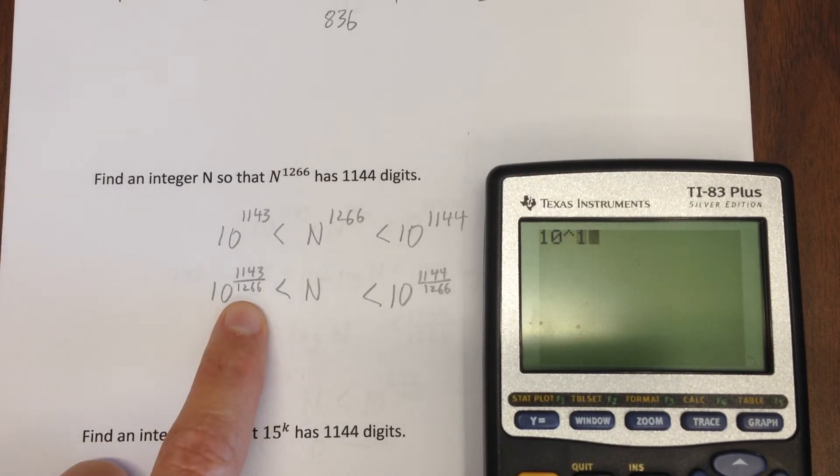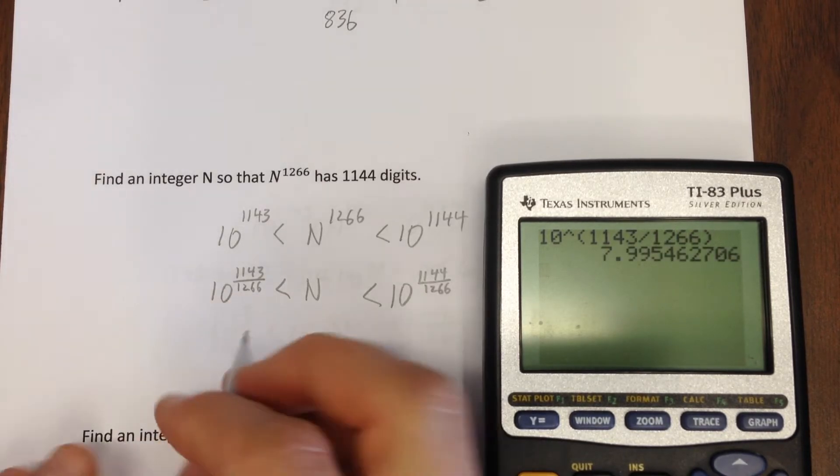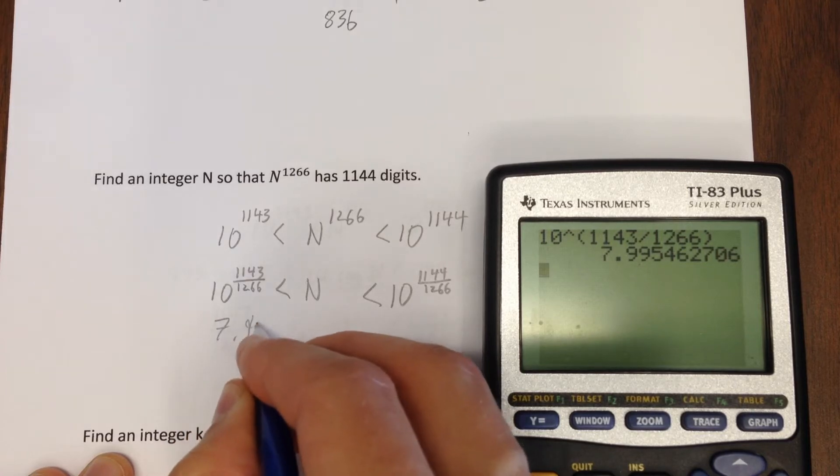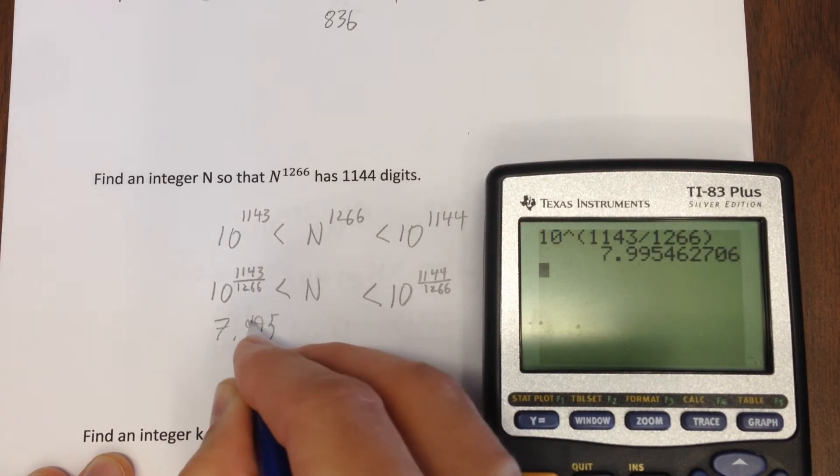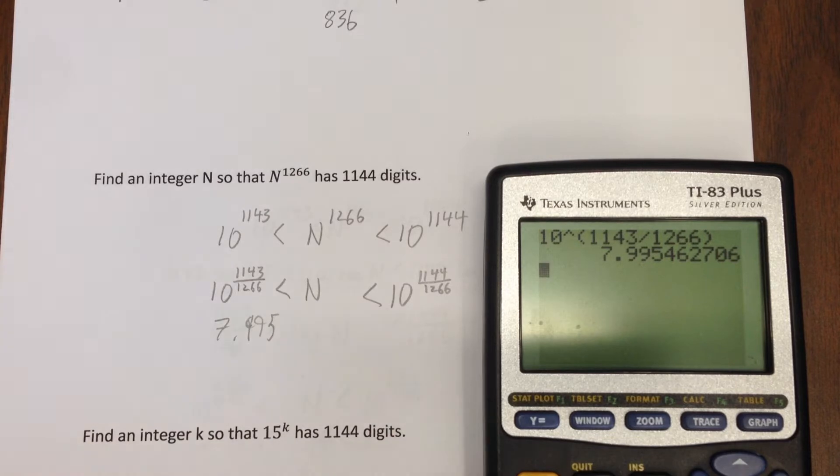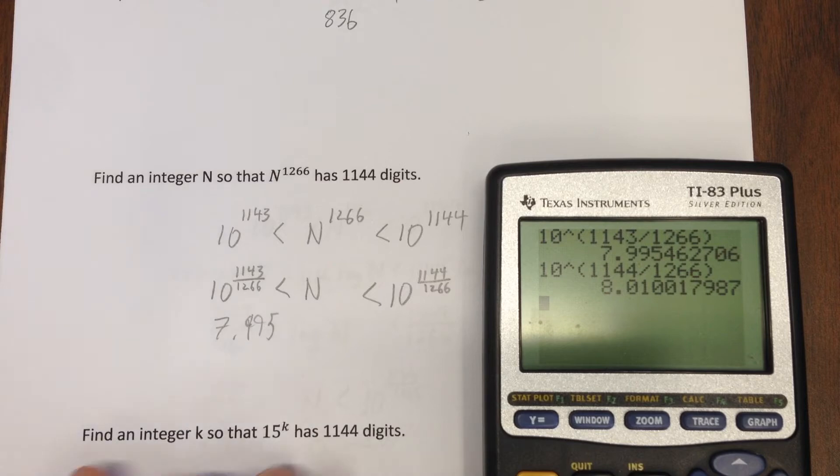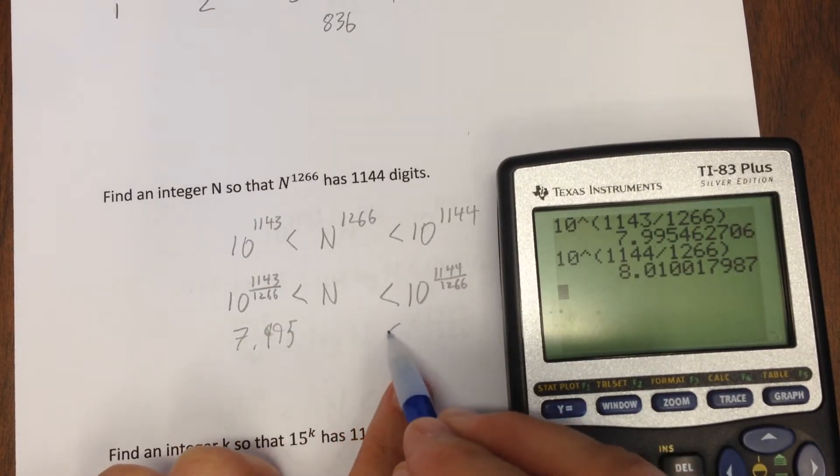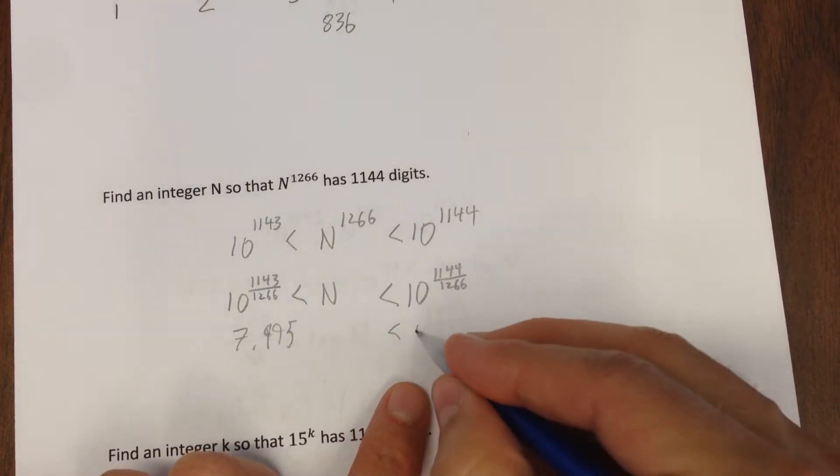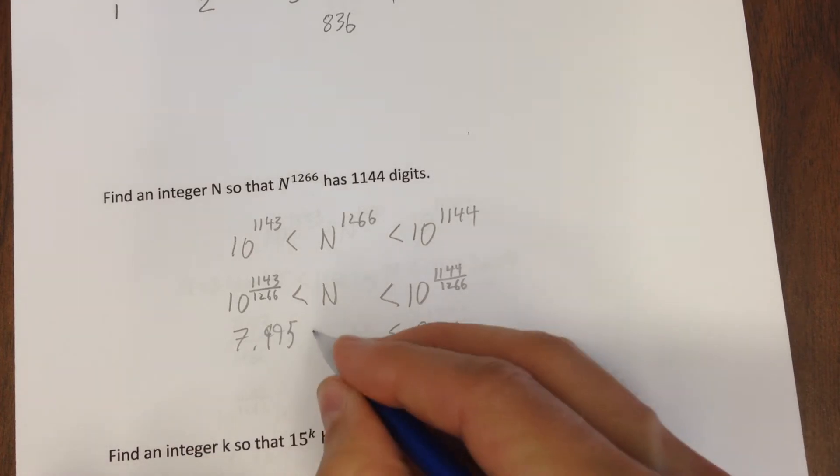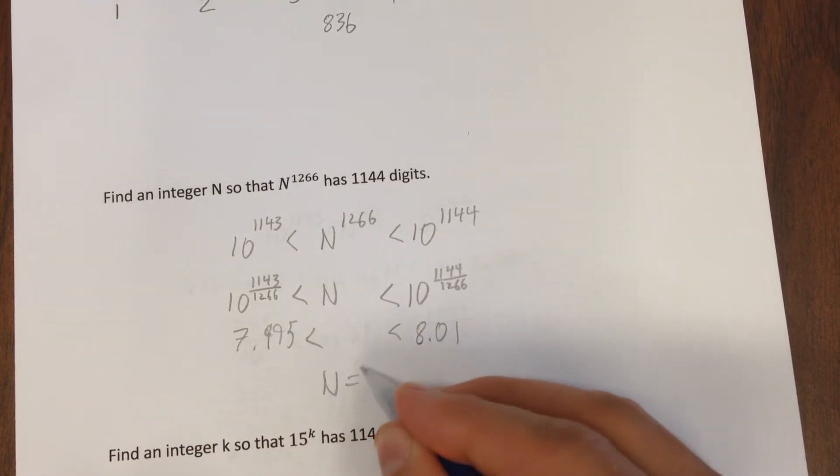10 to the 11, oops, I guess I need a parenthesis, 1143 divided by 1266, well that's 7.995 and then if I took that same thing and put in 1144, this is now pretty obvious that my integer n needs to be 8.